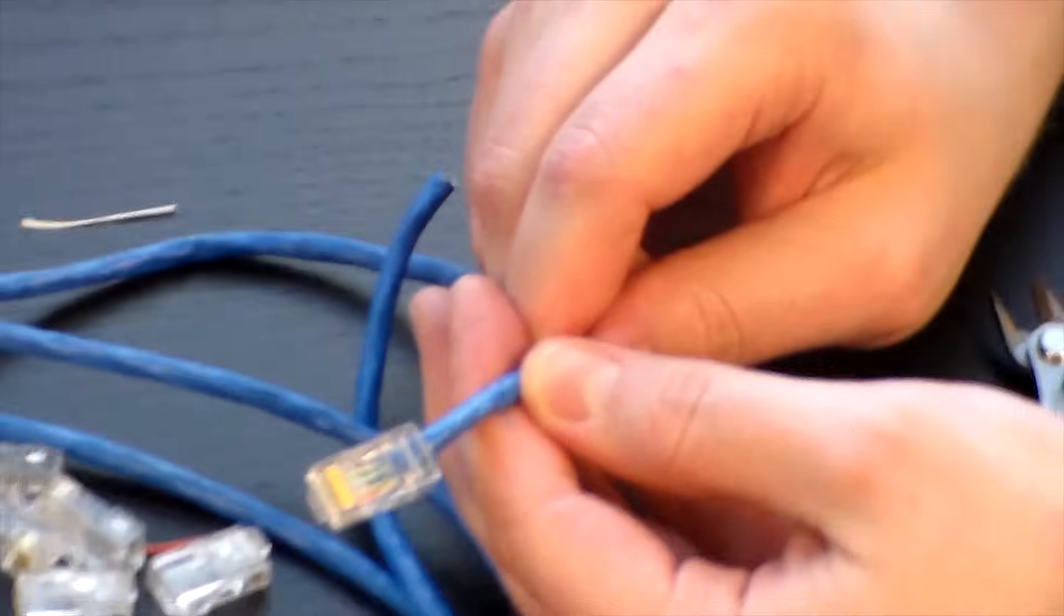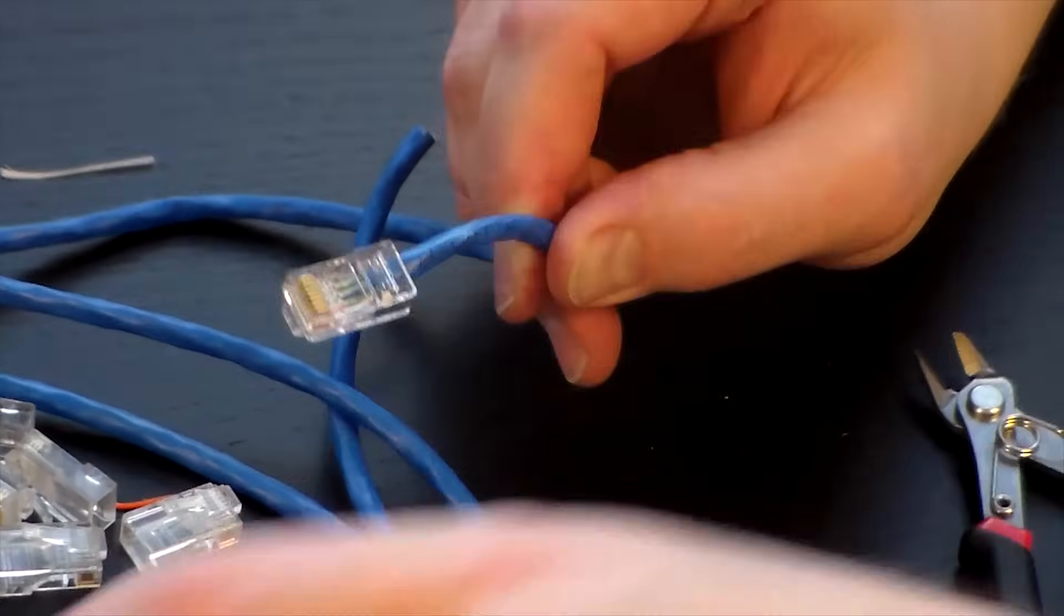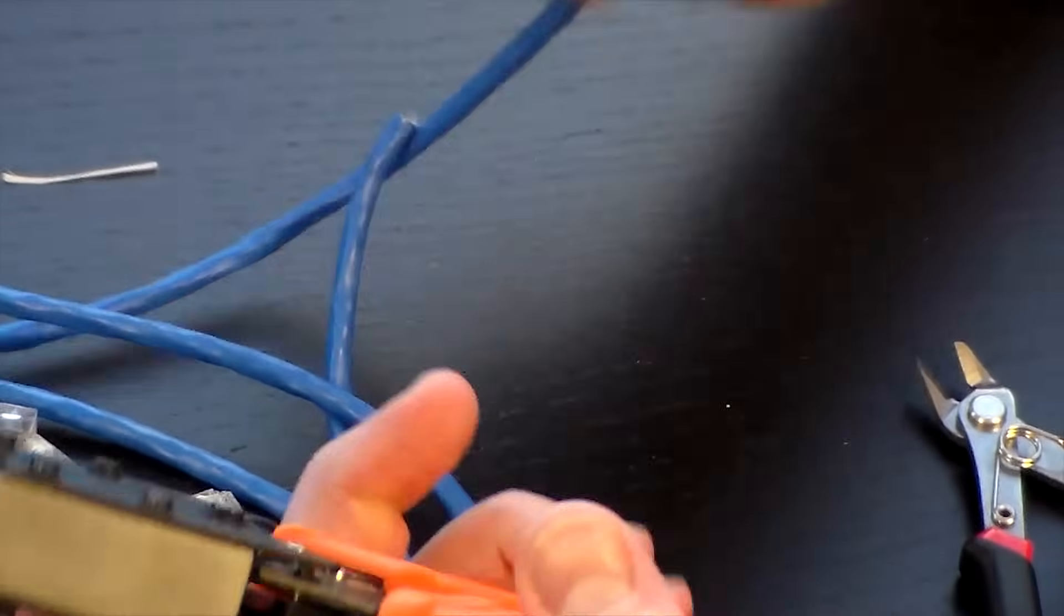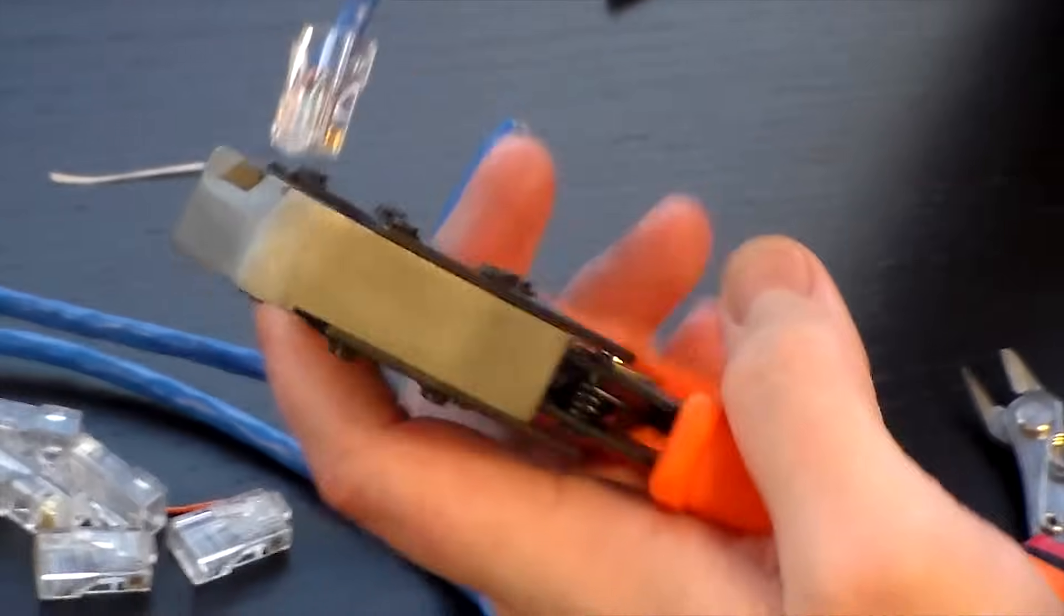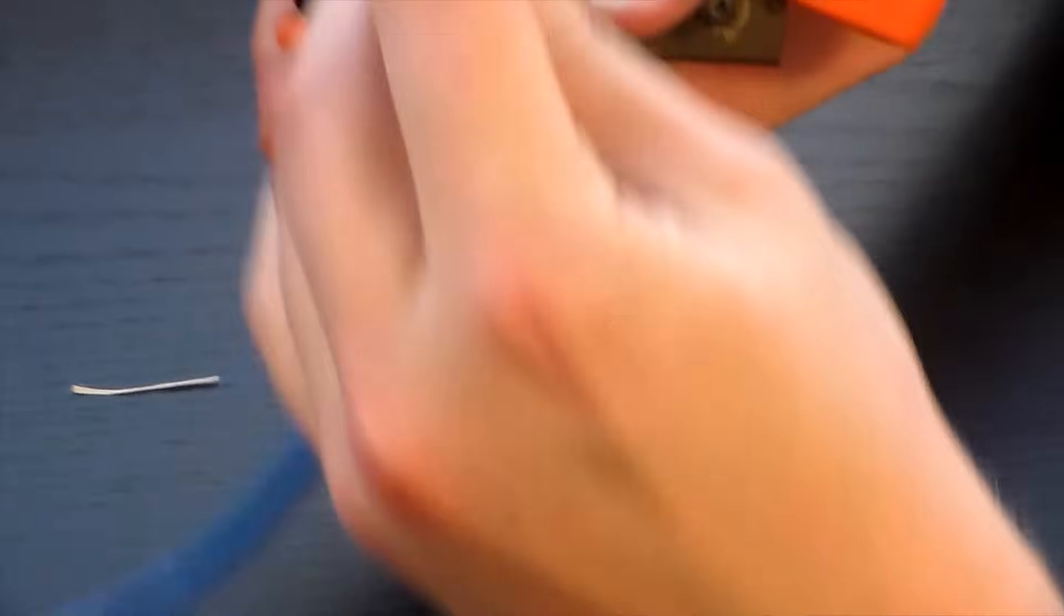Next, grab the FD 500 crimping tool and insert the connector into the top right slot. It clips in kind of like you'd clip it into a wall jack. Get that clipped inside.